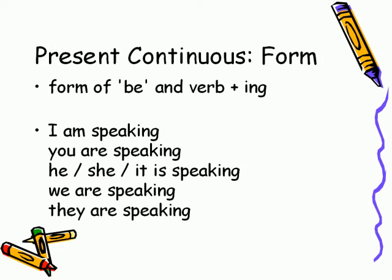Present continuous form: form of 'be' and verb plus -ing. Example: I am speaking, you are speaking, he is speaking, she is speaking, it is speaking, we are speaking, they are speaking.